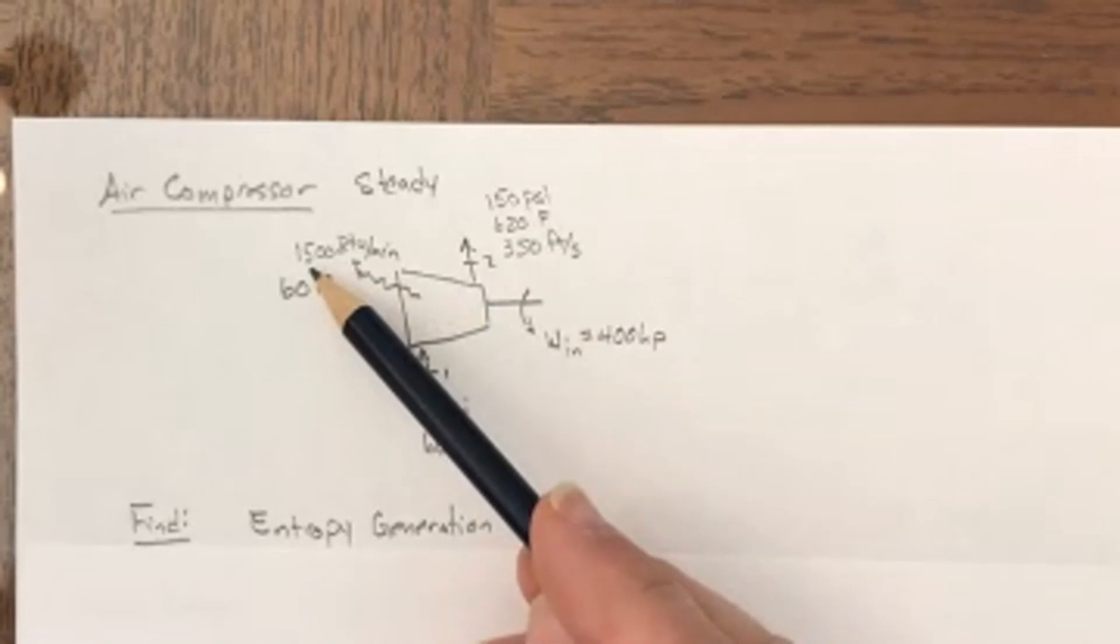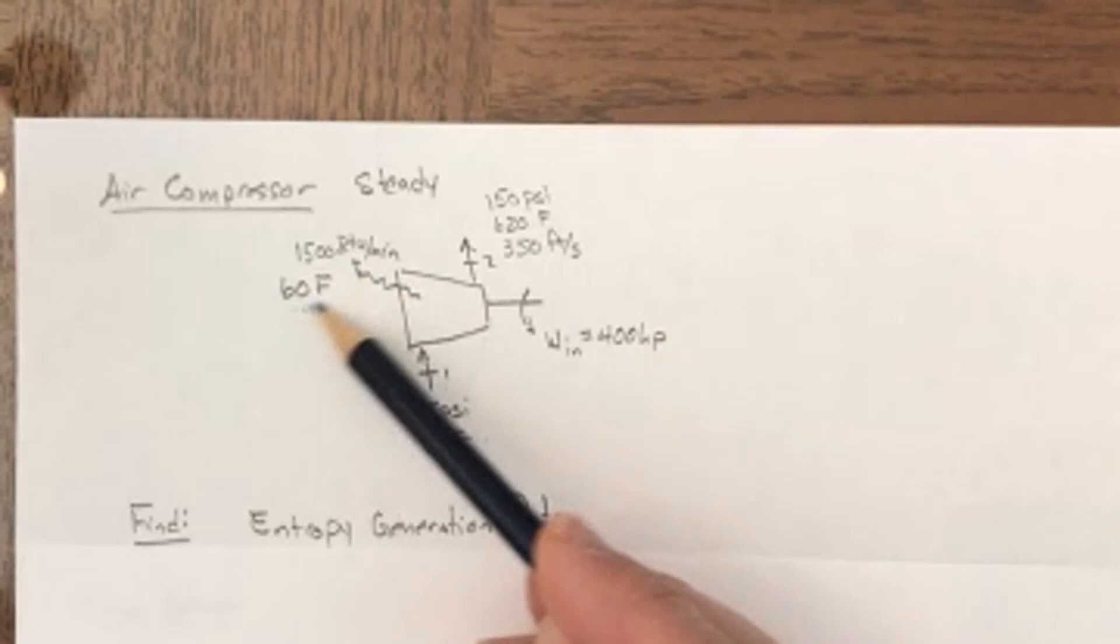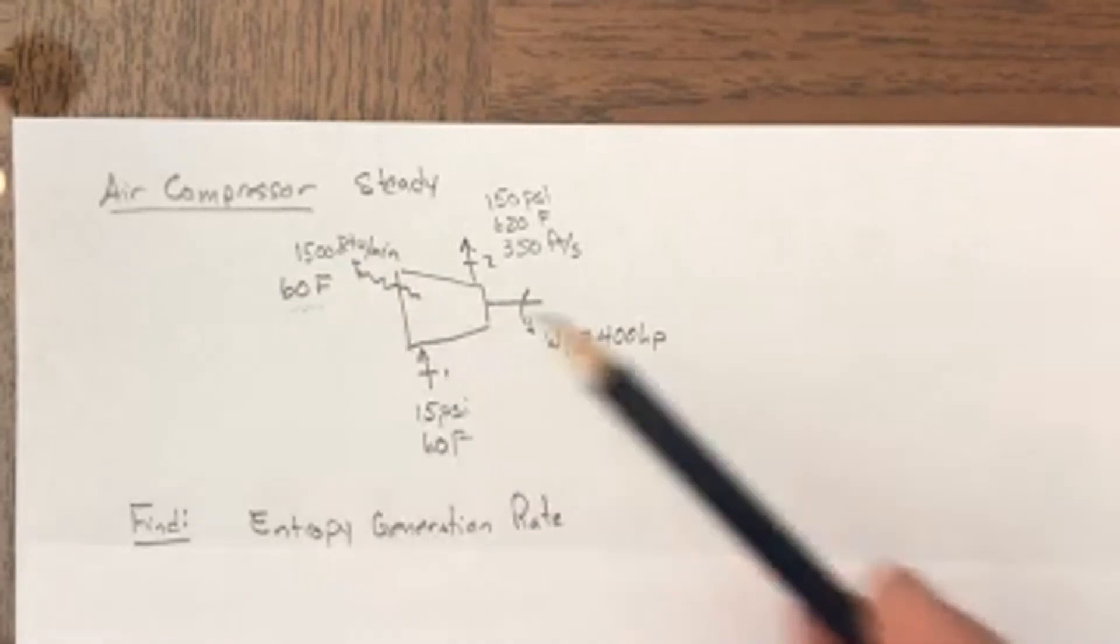There is some heat escaping. There's 1,500 BTUs per minute escaping from this air compressor to the environment that's being held at about 60 degrees Fahrenheit, and it requires 400 horsepower to compress the air.